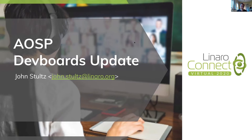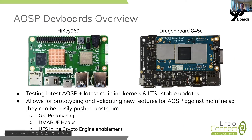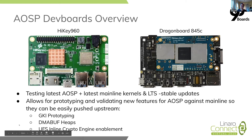Hi, my name is John Stultz and I'm going to talk a little bit about AOSP dev boards and just kind of update the status on that. When we talk about AOSP dev boards, we're talking about the HiKey 960 and the Dragonboard 845C, which are both 96Boards that are supported in AOSP. These are basically our test vehicles that we use in order to test the latest AOSP userspace base code with the latest mainline kernels, every RC1, RC2, etc. And that actually manages to catch a fair number of regressions that hopefully we're able to catch before other people run into.